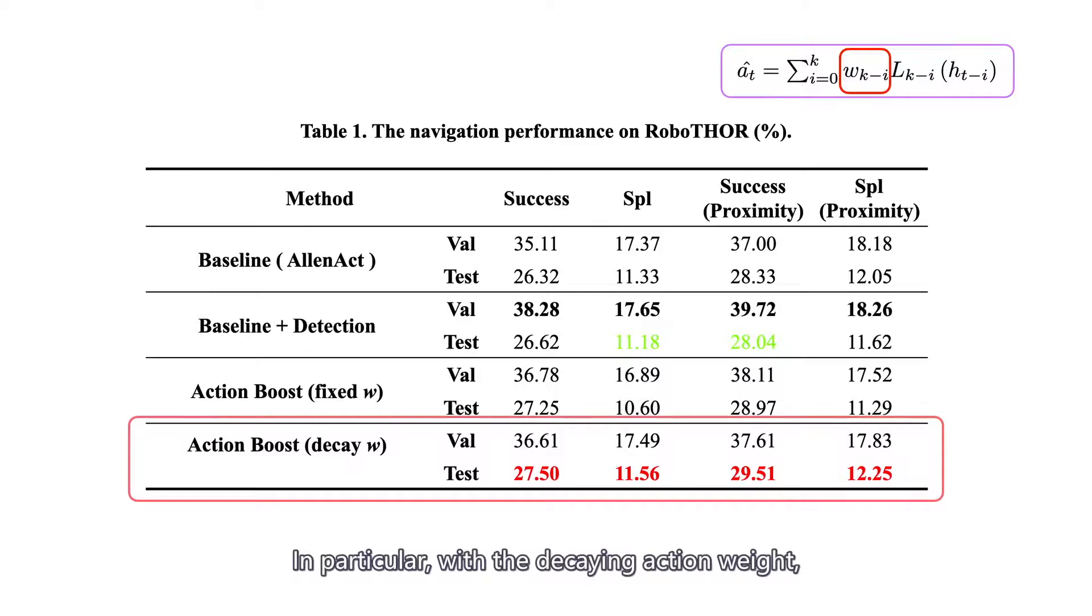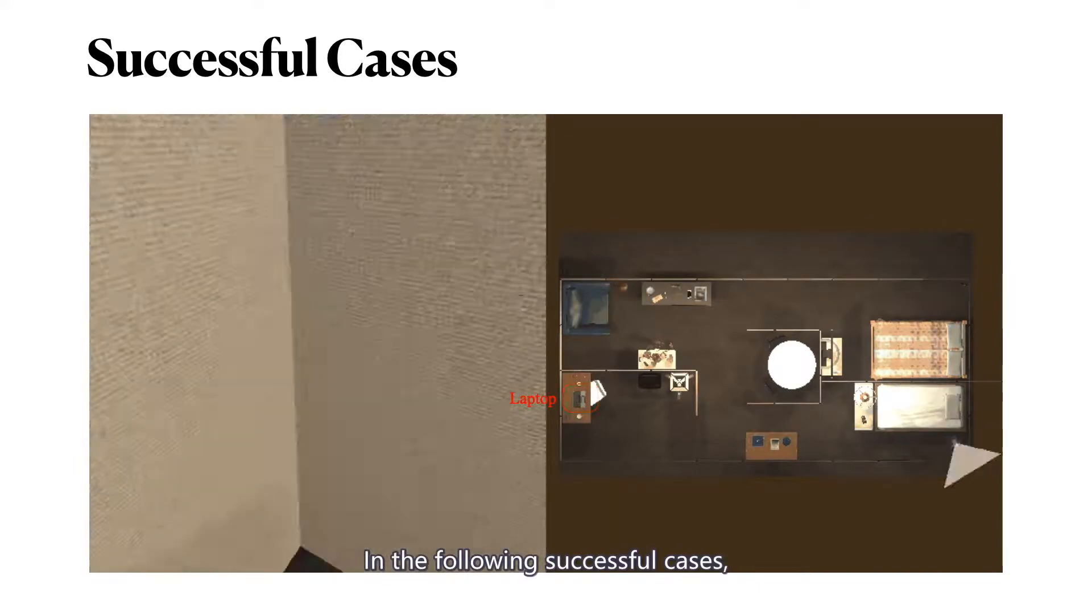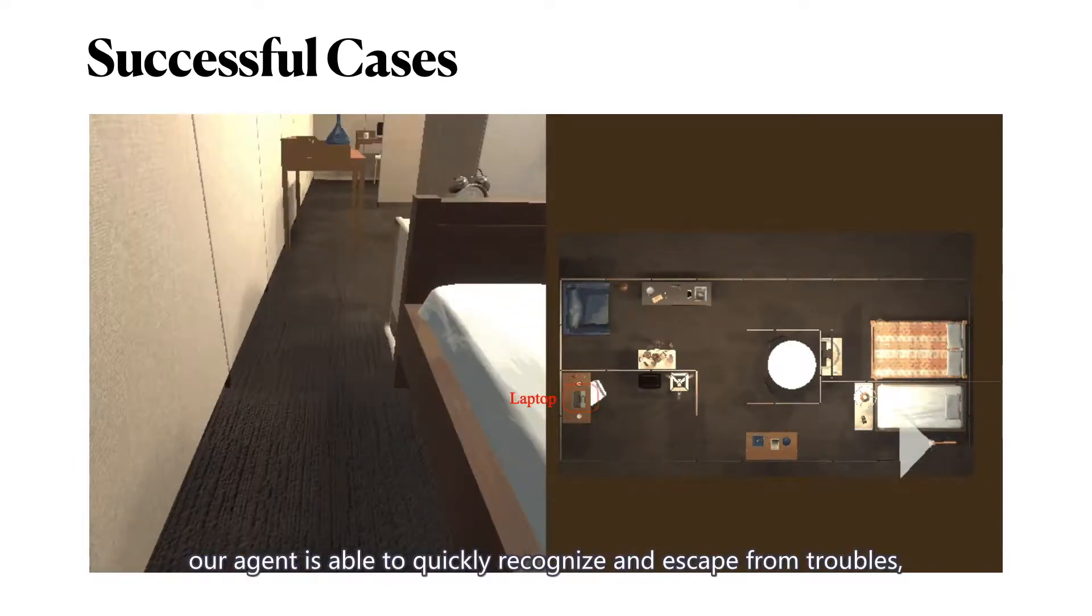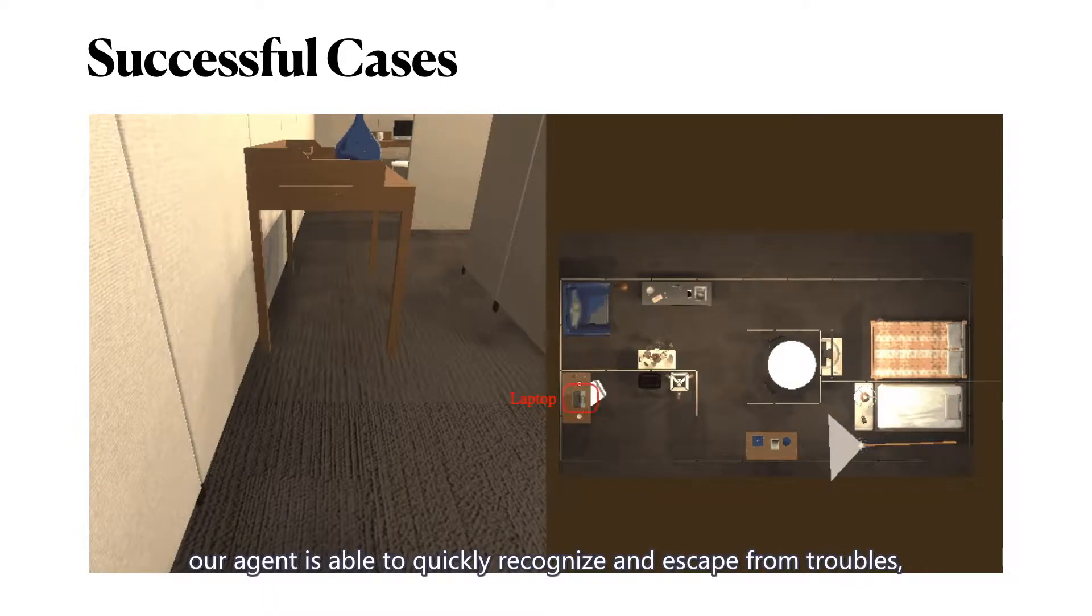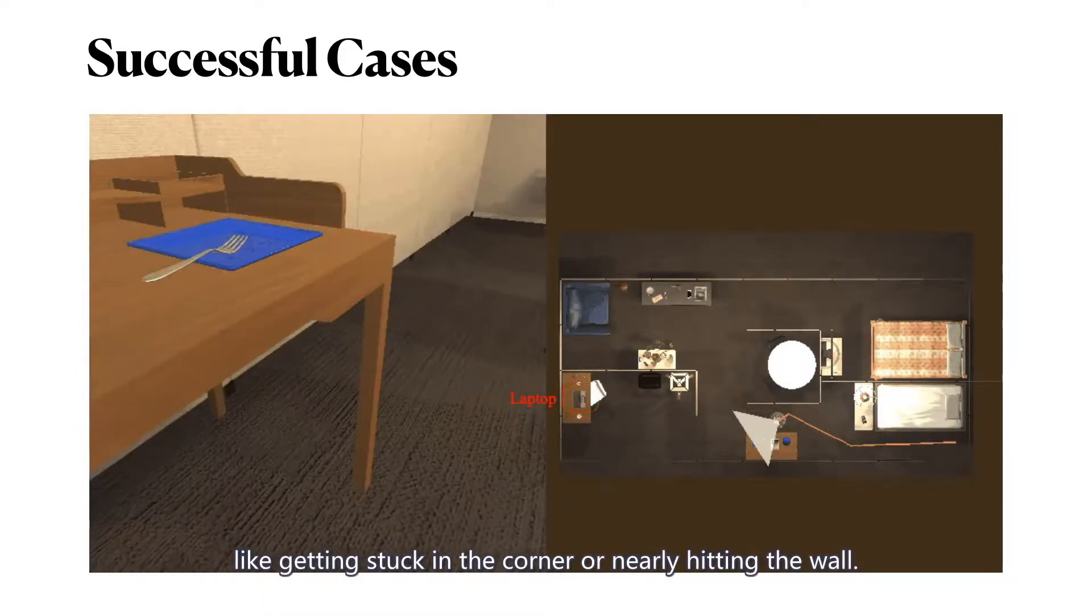In particular, with the decaying action weight, the navigation can get the most improvements in all evaluation metrics. Here are our case studies. In the following successful cases, our agents are able to quickly recognize and escape from troubles, like getting stuck in the corner or nearly hitting the wall.